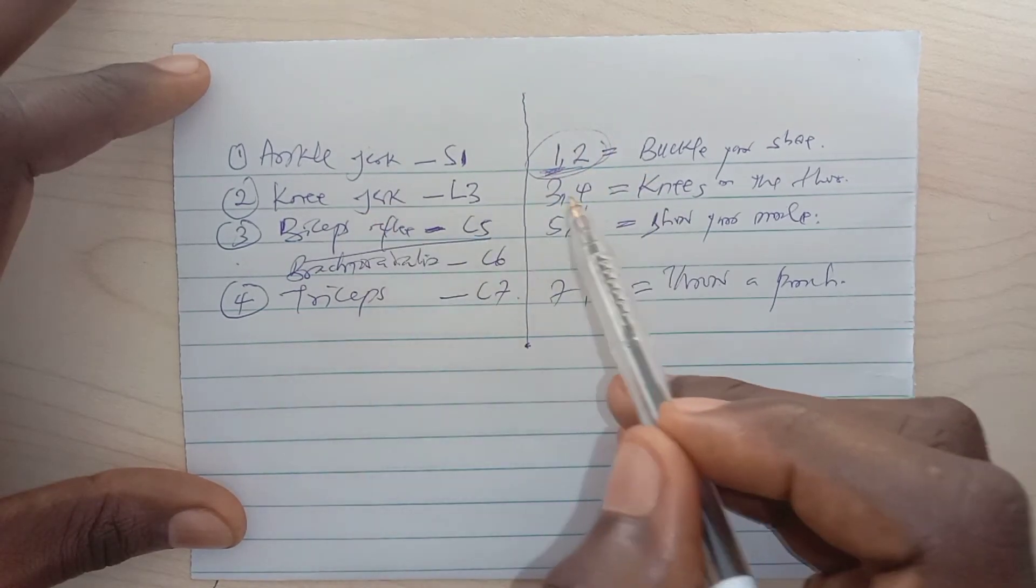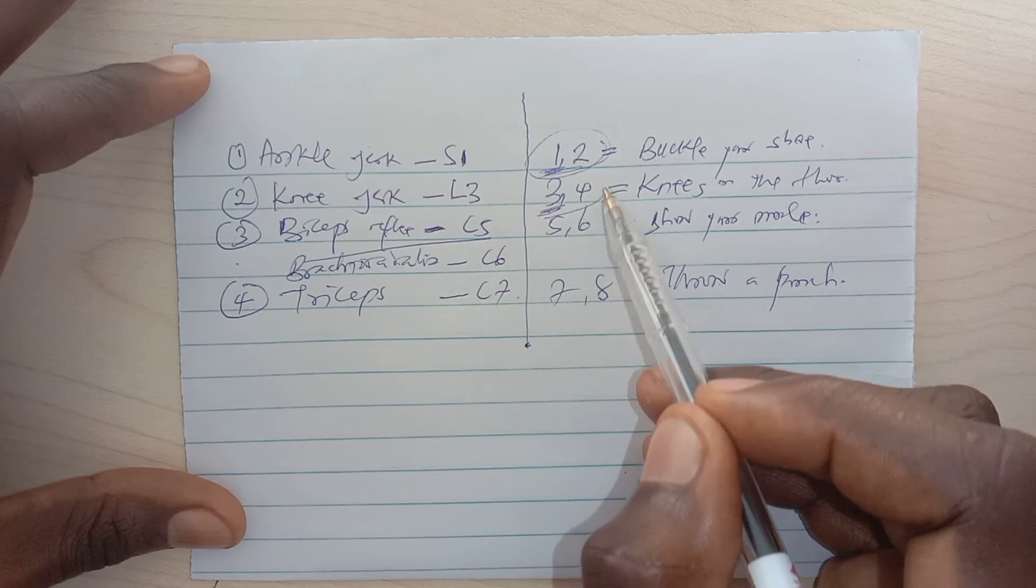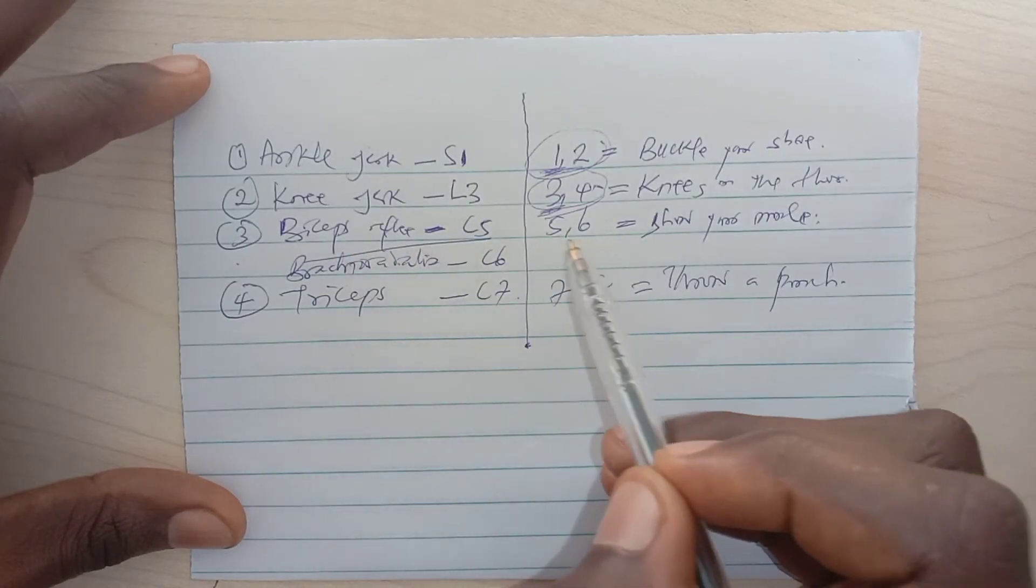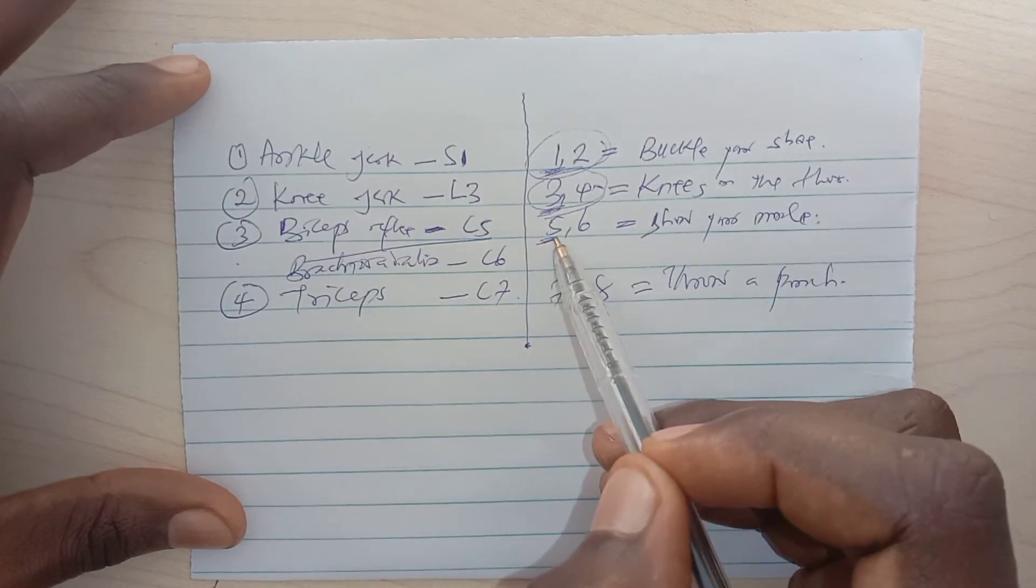Knee jerk mainly L3, L3-L4 that's correct. Bicep reflex mainly C5, that's the motor root.